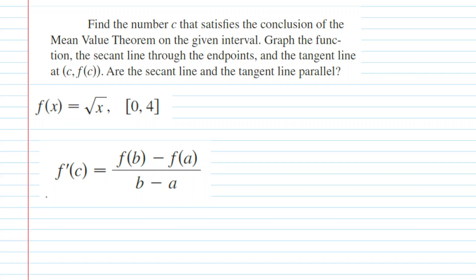Once the two hypotheses of the Mean Value Theorem are satisfied, we are able to find a number c that satisfies the conclusion, and the conclusion of the Mean Value Theorem is stated right here.